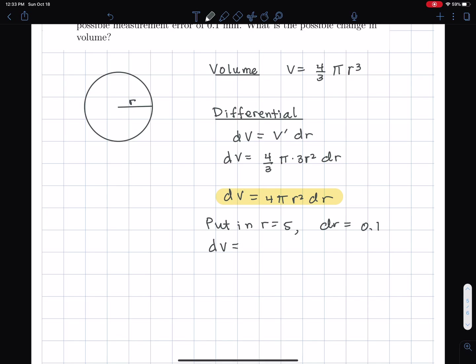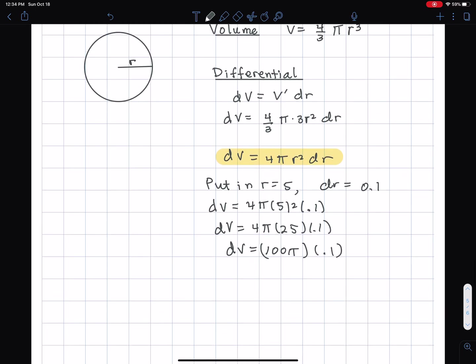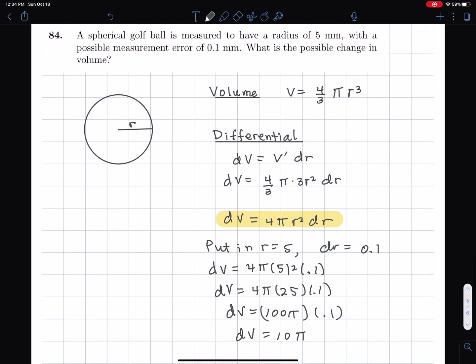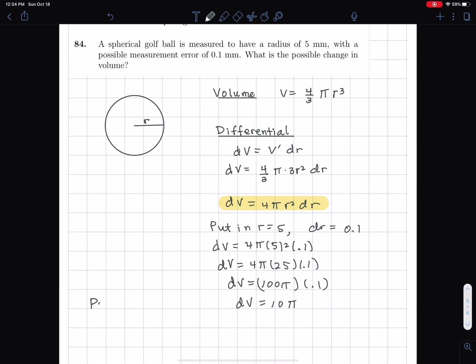So I put in r is 5, and then I get four times pi times 25 times 0.1. So dV is equal to 100 pi times 0.1, which is 10 pi. That's our rate of change times our small change in r, which is 0.1. So dV is equal to 10 pi, and this is the possible change in volume, meaning that's at most what it could be.